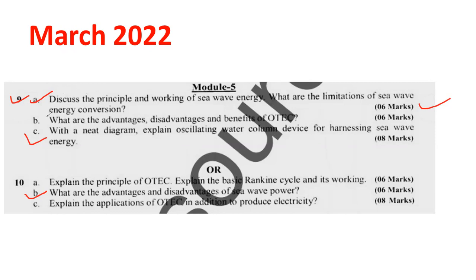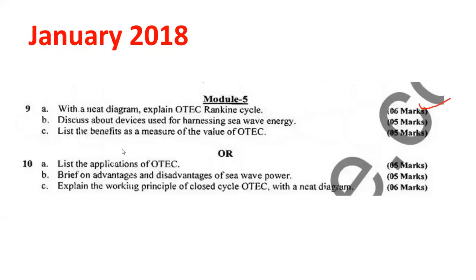These are the few questions from Module 5, especially from the topic of wave energy. Don't leave any topic — at least go through it so that you can answer effectively. Another question from another paper: discuss the devices used for sea wave energy. There are different devices available — explain with the help of neat diagrams. Another one is: briefly discuss the advantages and disadvantages of wave energy. It's a simple question — pros and cons you have to explain.